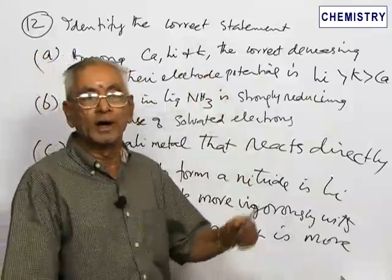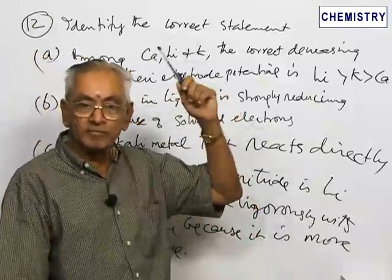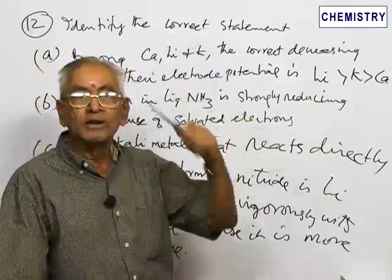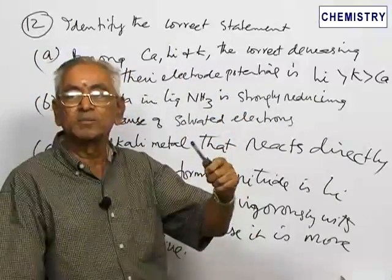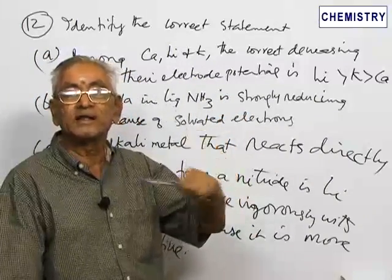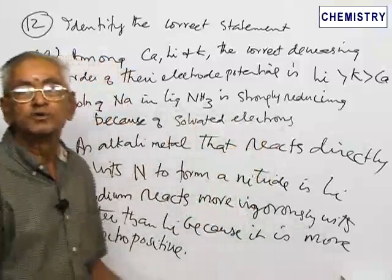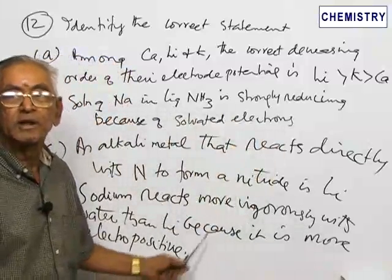As we go down a group from lithium—sodium, potassium, rubidium, cesium—the electropositive nature increases. Sodium is more electropositive than lithium.